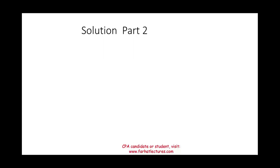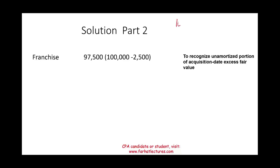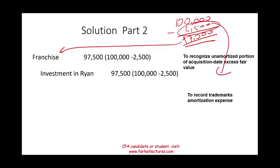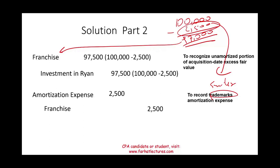We also need to recognize the unamortized portion of the acquisition-date excess fair value. The franchise started at $100,000; in the first year we amortized $2,500, leaving $97,500. On the consolidation worksheet we reinstate the franchise and credit Investment in Ryan $97,500. Then we record this year's amortization: debit Amortization Expense $2,500, credit Franchise $2,500. In subsequent years, the franchise balance would be reduced by another $2,500.